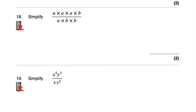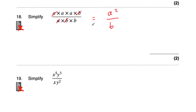Question number 18: simplify (a × a × a × b) divided by (a × b × b). Simplify the numerator to a³b and the denominator to ab². Cancel one a from top and bottom, and one b from top and bottom. We're left with a × a on top, which is a², and b on the bottom. The answer is a² over b.